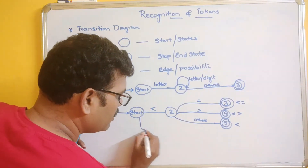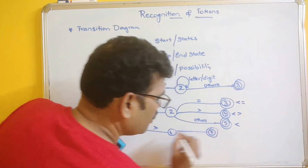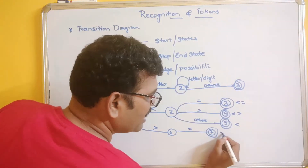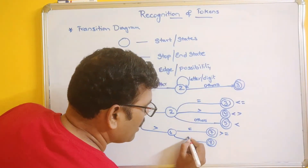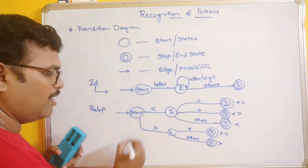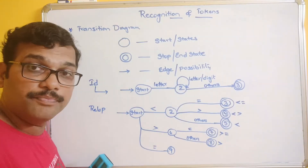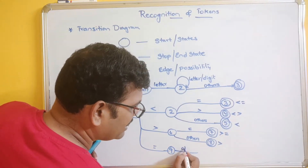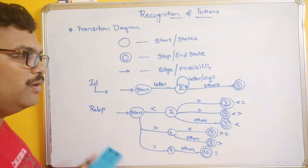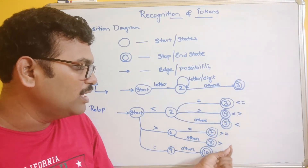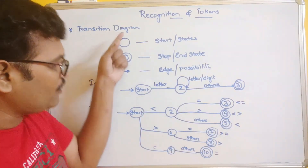If it is a greater-than symbol, one possibility is less than or greater than or equal to. Another possibility with others or epsilon gives just the greater-than symbol. There is also the possibility of 'equal to', which with others leads to an end state representing 'is equal to'. So the relational operators — less than or equal to, less than, not equal to, greater than or equal to, greater than, and equal to — can all be represented using this transition diagram.